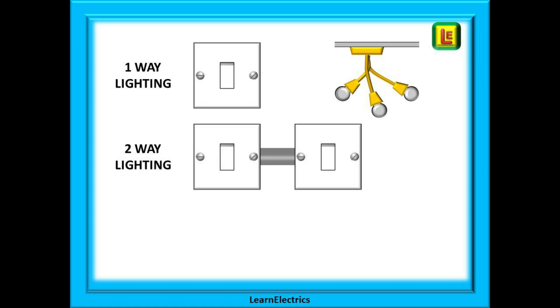In another video we will look at two-way lighting where a light is controlled by any one of two switches. A good example is upstairs and downstairs lighting or lighting in rooms with two access doors.